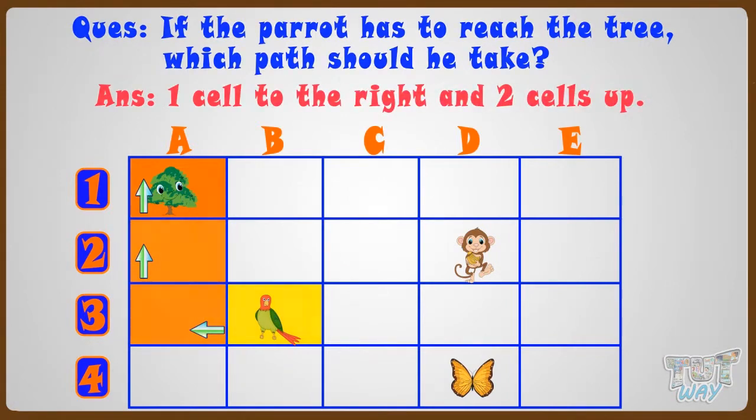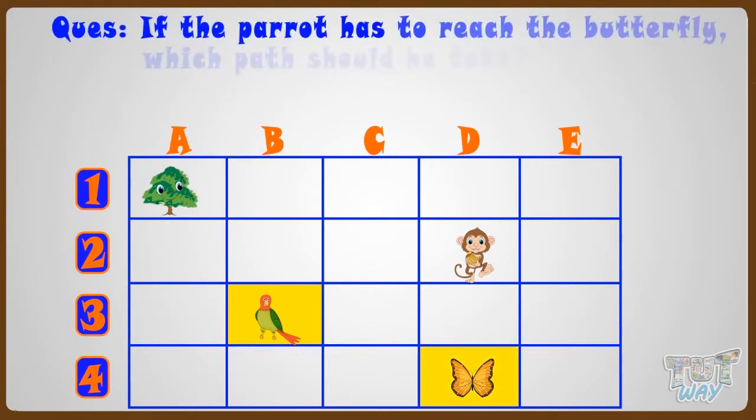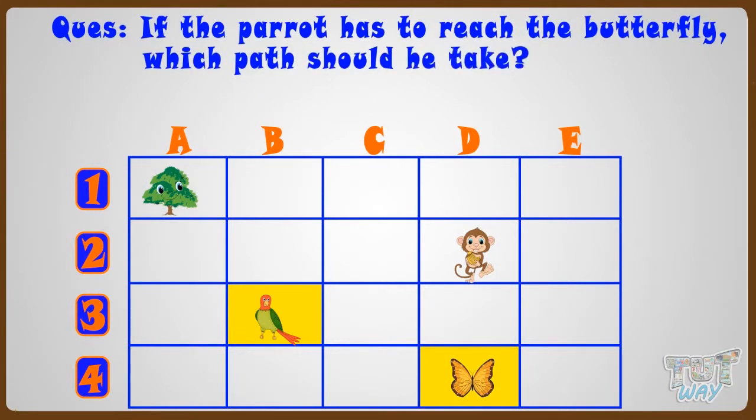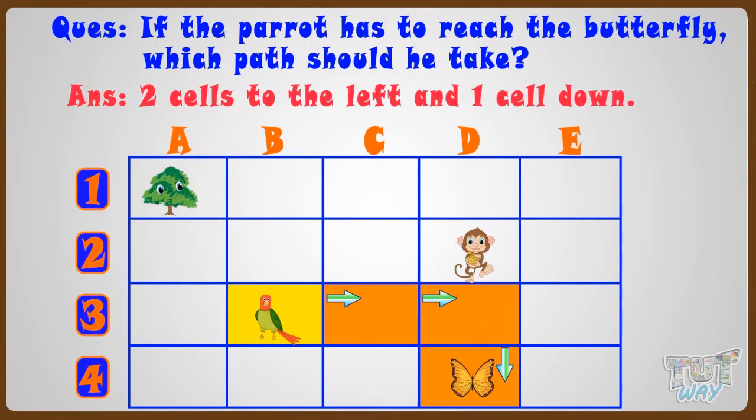Now let's find if the parrot has to reach the butterfly. Which path should he take? He should move 2 cells to the left and then 1 cell down. So his path should be 2 cells to the left and 1 cell down.